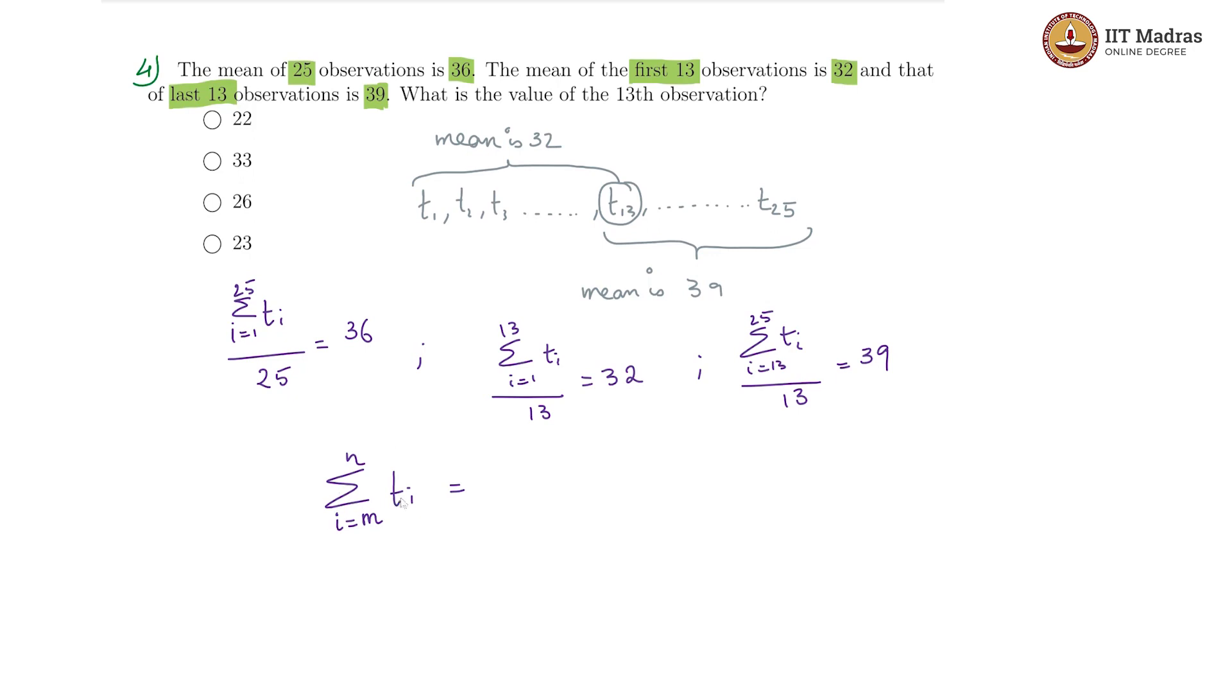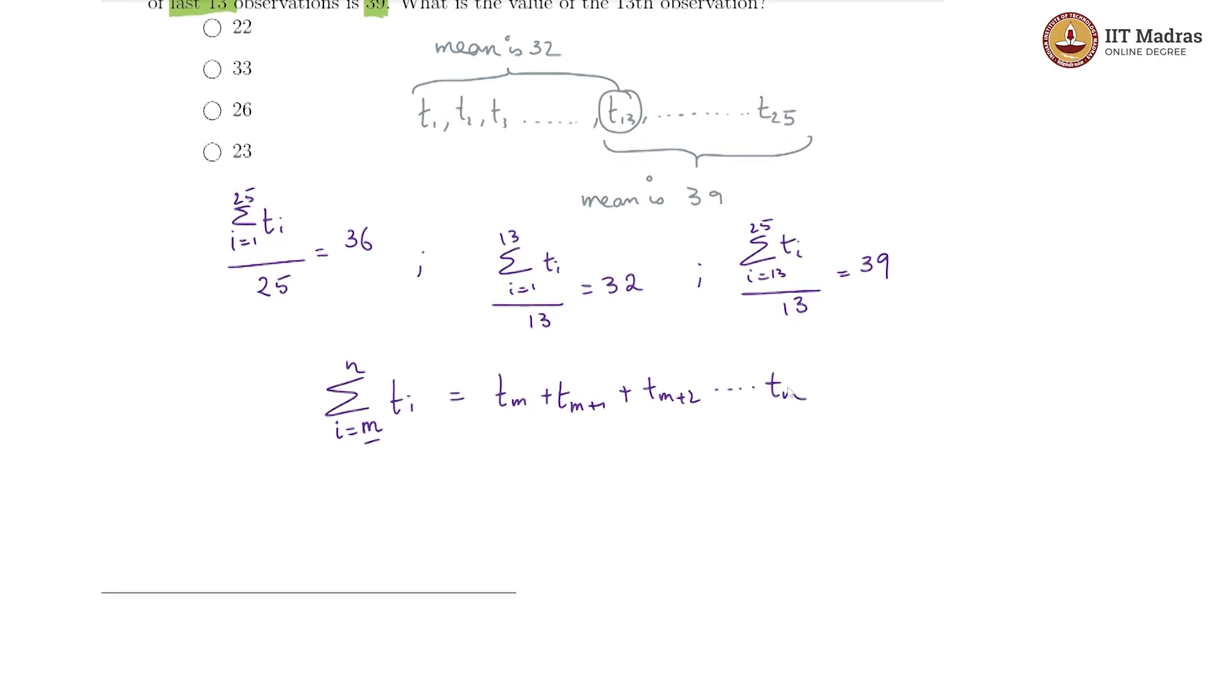This is basically sigma implies a summation, so you are adding things and what are you adding, you are adding t i's where the i variable goes from m to n, so that would be t m plus everything on the way till n, so t m plus t m plus 1 plus t m plus 2, so on till t n. And this is what the sigma notation indicates.